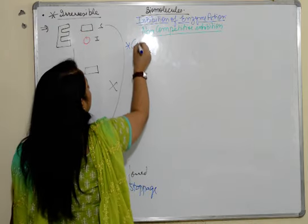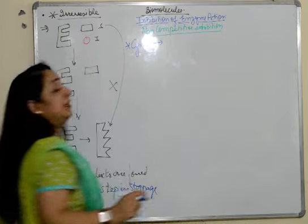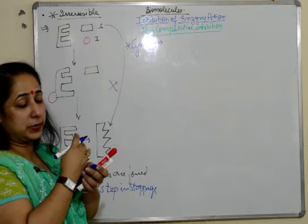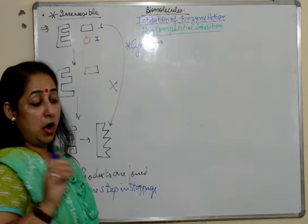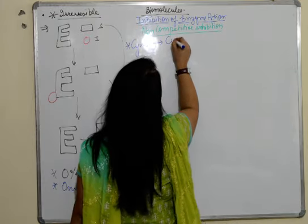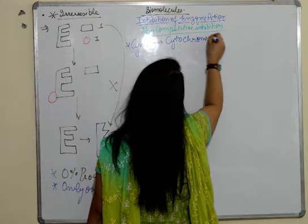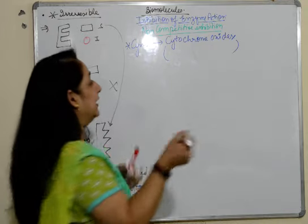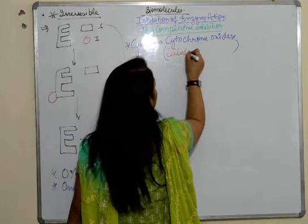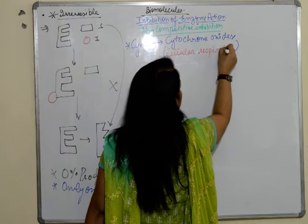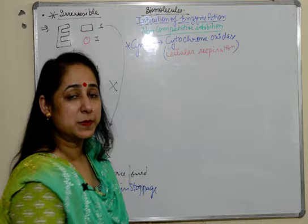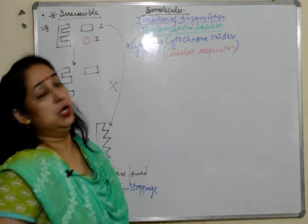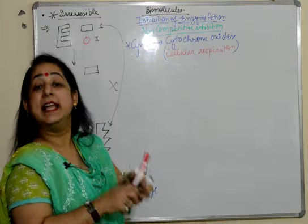What is the example? The example we'll quote here is of cyanide. Cyanide, as soon as it's taken, just abruptly stops all the enzyme activity and the death of an individual takes place. It acts on cytochrome oxidase, which is responsible for cellular respiration. So immediately cellular respiration stops in mitochondria and hence the person immediately dies. There are no steps, one time stoppage. That takes place in non-competitive inhibition reactions.